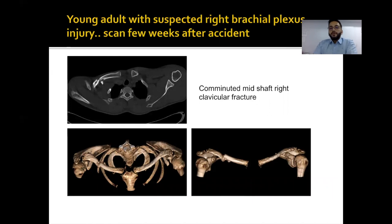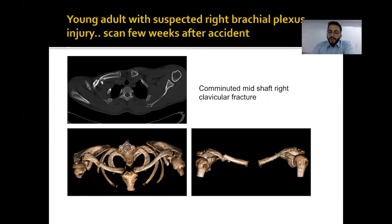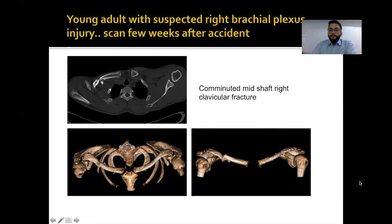Another patient — a young adult with a vehicle accident and a fracture of the right clavicle — presented with suspected brachial plexus injury but did not come immediately after the accident. The treating surgeon gave a few weeks of observation time, but when the patient did not recover and still had upper limb weakness, he was sent for imaging. The immediate CT scan images clearly showed a fracture involving the mid part of the right clavicle with a displaced bone fragment. An MRI of the brachial plexus was performed two weeks later.